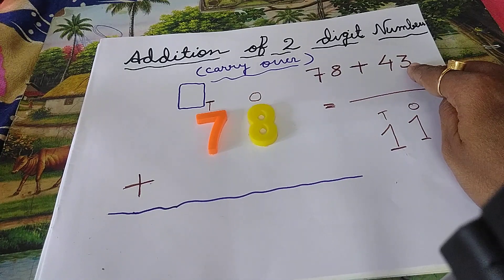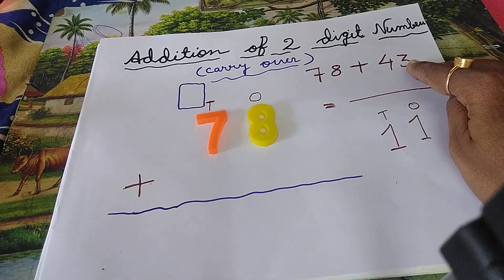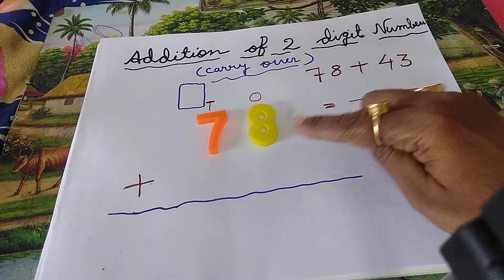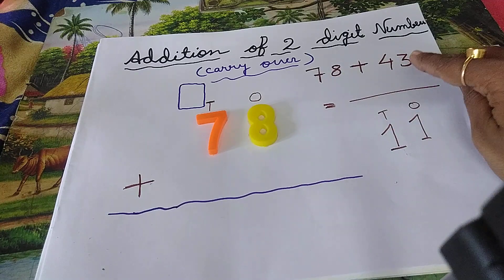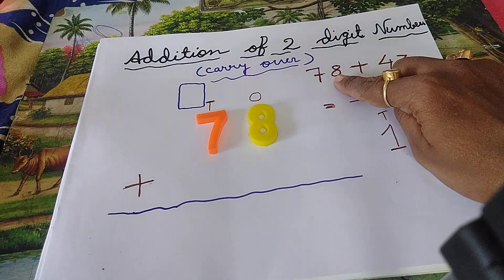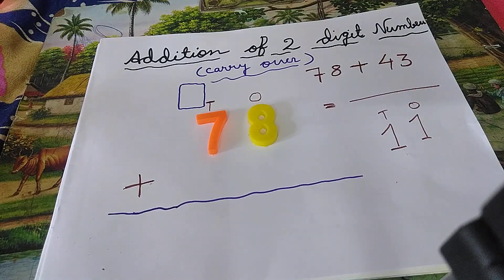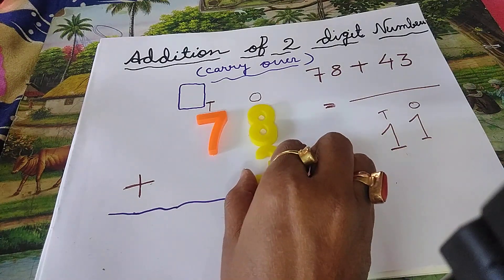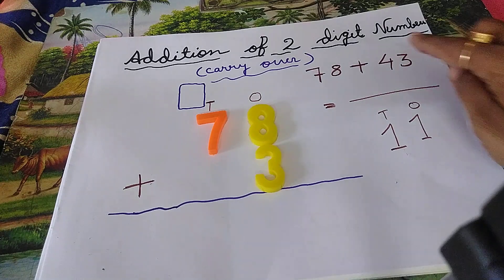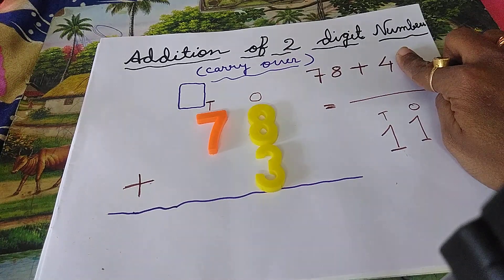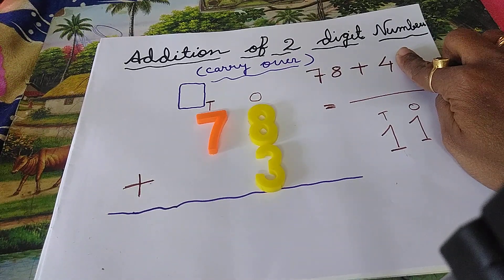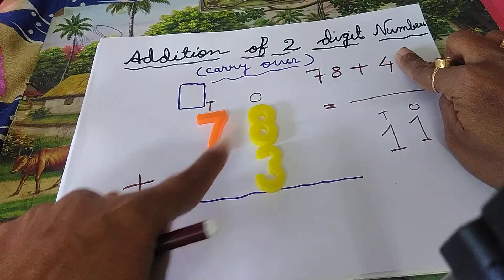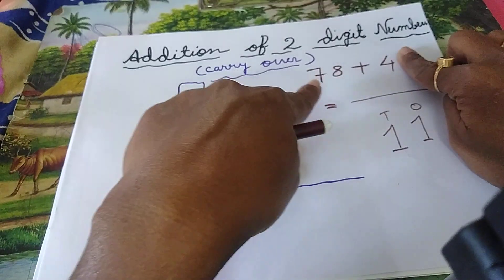In 43, in this number, the last digit is 3. So write 3 under 8. Okay. Which one is left? 4. Then 4, write 4 under 7. Write 4 under 7.